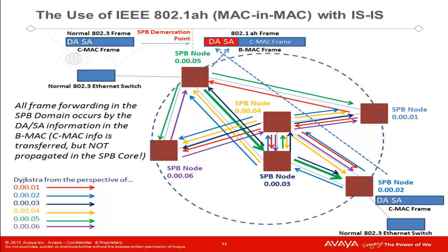The original 802.3 frame is carried along totally intact as payload — this is termed as the CMAC, or client, frame. As the frame is ingested at SPB node 0.00.05, it uses the shortest path knowledge of that SPB node. The bold green arrow shows the shortest path across the network. Once the BMAC frame is delivered, it is de-encapsulated and the end station receives the frame. The SPB network is, in essence, transparent to the end systems on the stateless Flood and Learn Ethernet edge. All forwarding in the SPB network occurs by the use of BMAC addresses and the shortest paths. The end result is a very stateful deterministic forwarding model that does not use flooding, because all forwarding always occurs over a path.